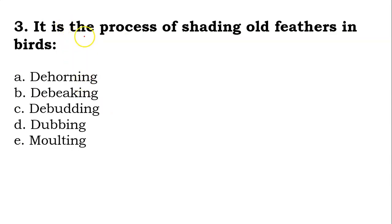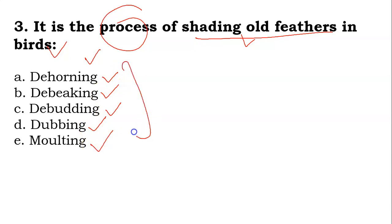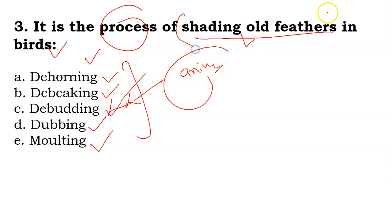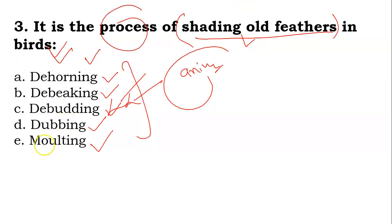The third question: it is the process of shedding old feathers in birds. You have to identify the process known as shedding old feathers in birds. Options are Dehorning, Debeaking, Debudding, Dubbing, or Molting. Its answer is E — Molting is the process of shedding old feathers in birds. Answer is E.